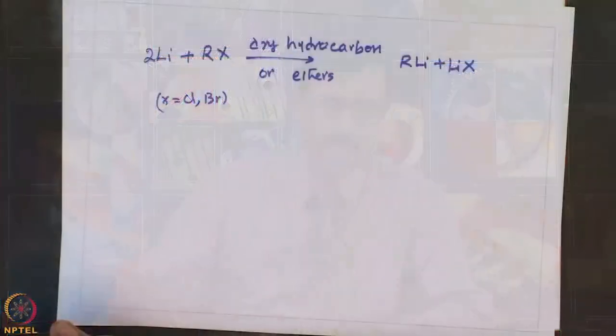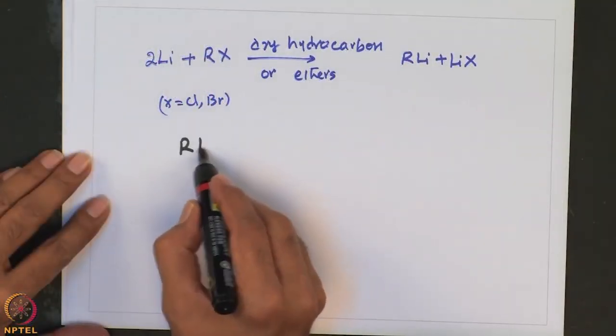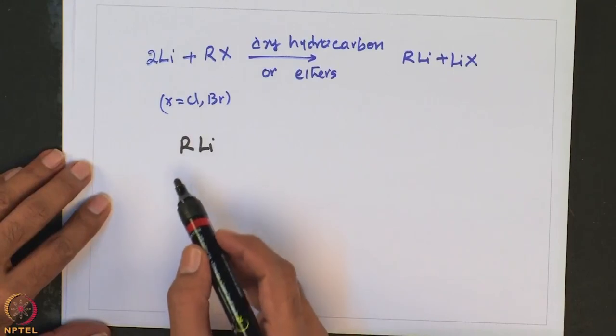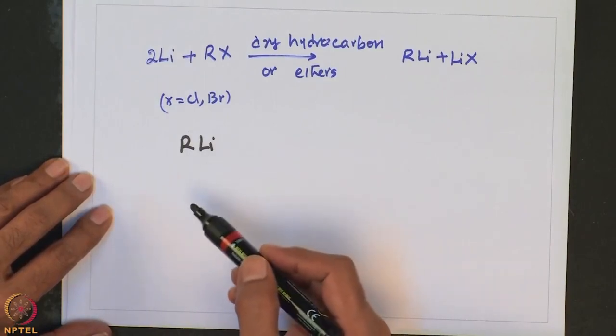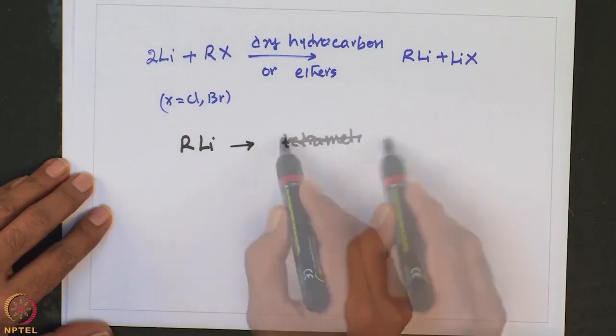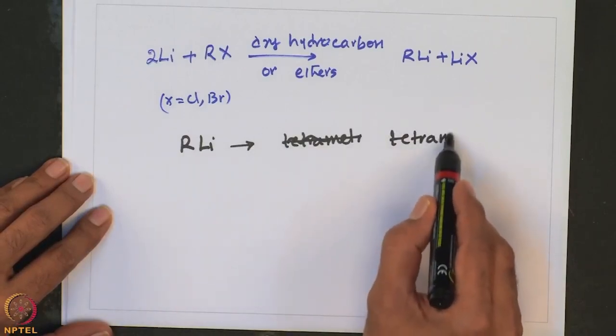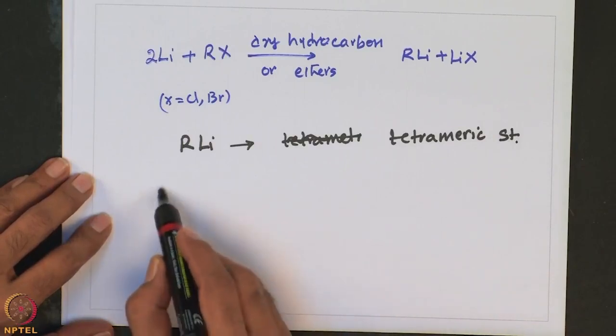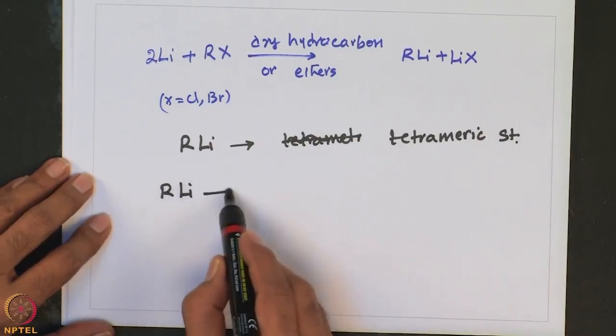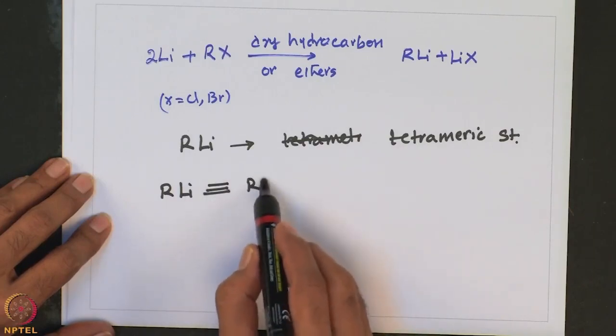Methyl lithium prefers a tetrameric structure, and its reactivity and utility is more or less similar to Grignard reagents such as RMgX or diorgano reagents such as R2Mg. Generally, RLi where R is an alkyl or aryl group associates — methyl lithium, n-butyl lithium, and secondary butyl lithium all exist in the form of a tetrameric structure in the solid state.